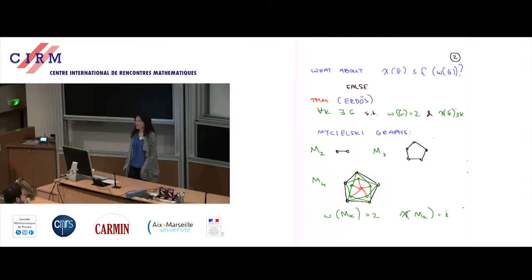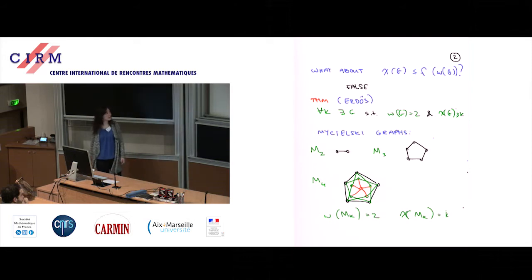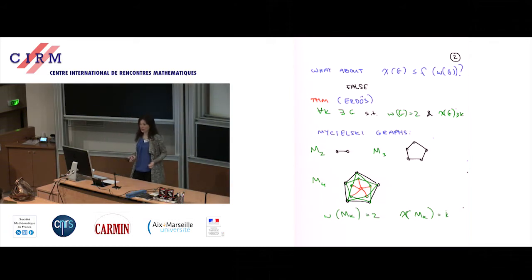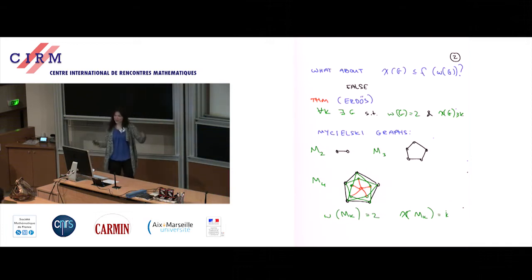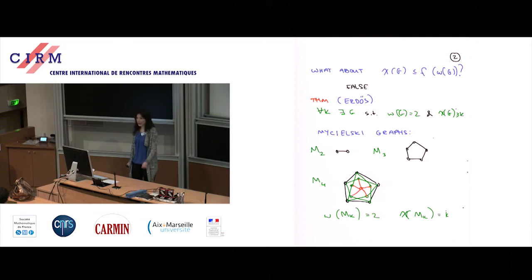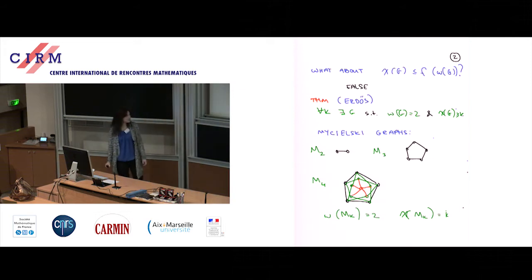Erdős proved that there are graphs with clique number two and arbitrarily large chromatic numbers. In fact, he proved something much stronger: there are graphs of arbitrarily large girth and arbitrarily large chromatic numbers. So not only are there no triangles, there isn't even a short cycle. Mycielski also proved the first statement — that there are graphs with clique number two and arbitrarily large chromatic number.